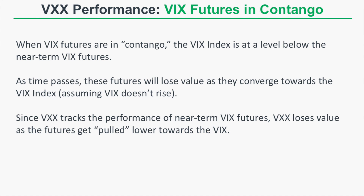Now that you know what VXX is and what it tracks, let's talk about the expected performance of VXX when the VIX futures are in various states. When VIX futures are in contango, that means that the VIX index is at a level below the near-term VIX futures. As time passes, all VIX futures contracts will converge towards the index. So if the VIX index is below those near-term VIX futures prices, then as time passes, those near-term VIX futures will lose value as they converge towards the VIX index.